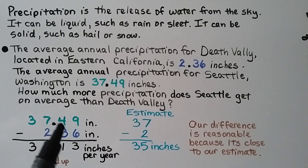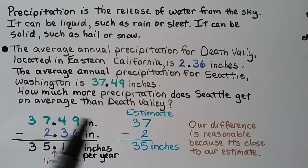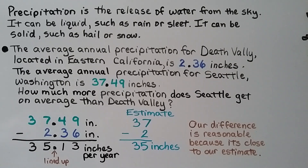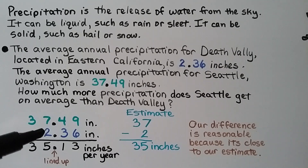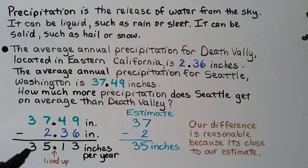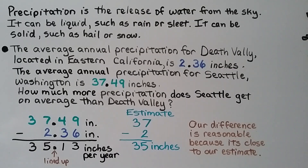We can estimate. This 4 is going to tell the 7 to stay the same, so it's going to round to 37. This 3 is going to tell the 2 to stay the same, so it's going to round to 2. We subtract and get 35 inches. We rounded both to the ones place because there are no tens in the smaller number — whatever place we round the smaller number to, we round the larger number to as well. We do our subtraction: 9 minus 6 is 3, 4 minus 3 is 1, 7 minus 2 is 5, and we drop down the 3 tens. We have 35 and 13 hundredths inches per year. That's very close to our estimate, so our difference is reasonable.